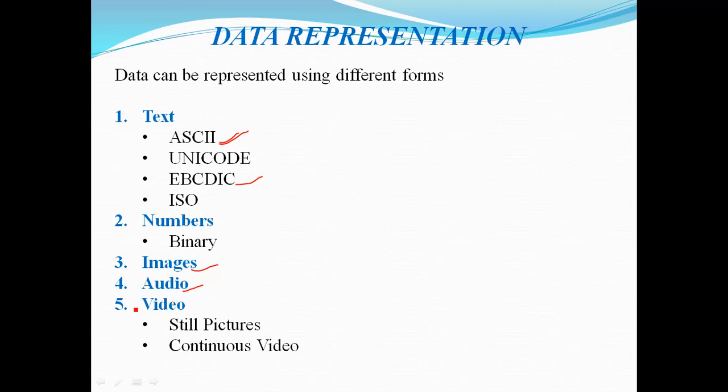Data can also be represented in the form of video. Video can be either a combination of images or a continuous entity captured by a camera. We have to change the video signal into a digital signal for transmitting it through a data communication system.